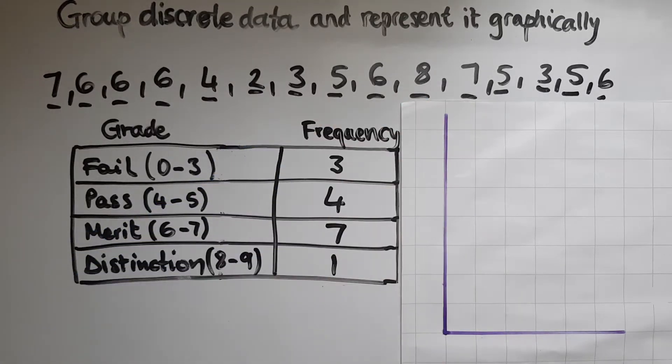And distinction, there was just 1 because there was only one 8 in there. So I've grouped the discrete data here and I'm going to show it graphically.